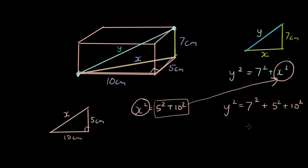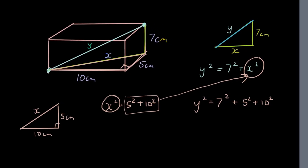That's what you would do if you want to use Pythagoras in a 3D context. Now we have y squared is equal to 7 squared plus 5 squared plus 10 squared, which is 174, which means y is simply square root of 174, which is 13.19 units long.